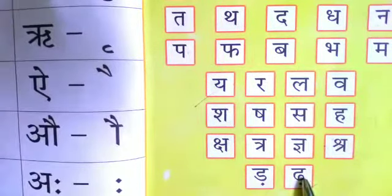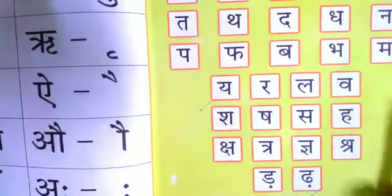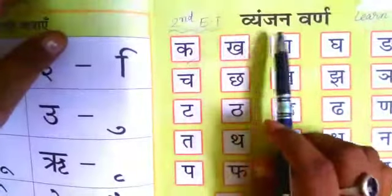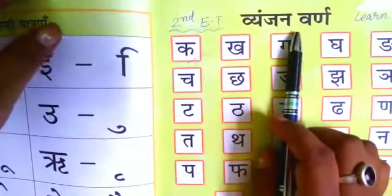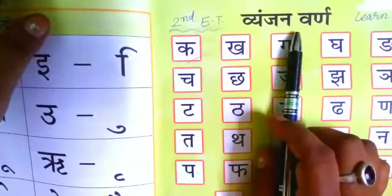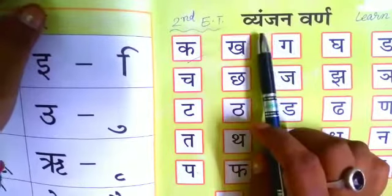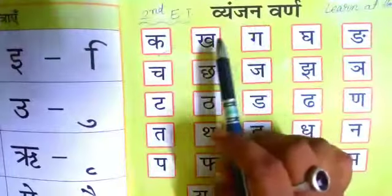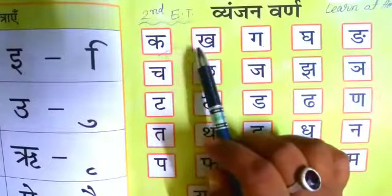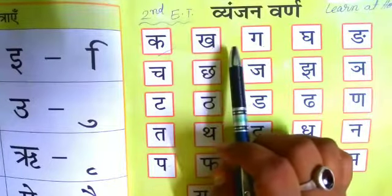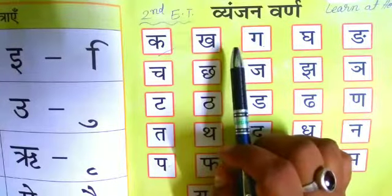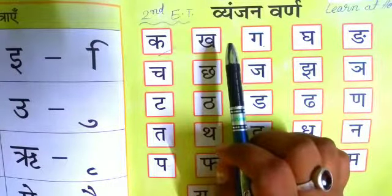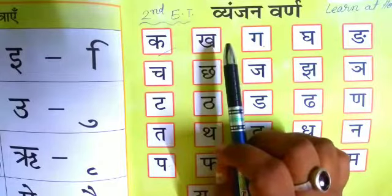तो बच्चो, आज हमने हिंदी के वेंजन वर्णों को पढ़ा है। आप सब घर पर अच्छे से पढ़ाई करें और इसको लिखने की अभ्यास करें। तो आज हम यहीं रखते हैं, दुबारा मिलेंगे। बाई!